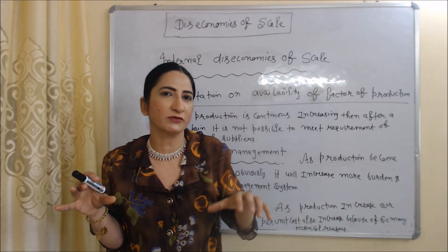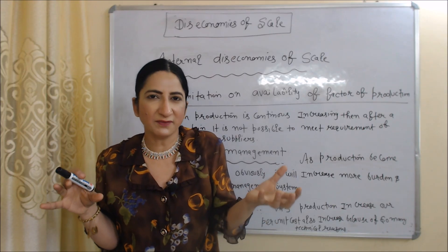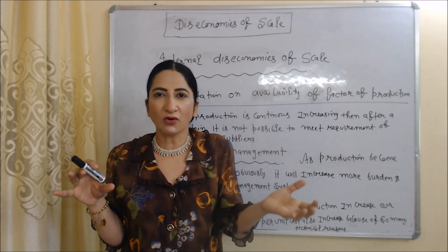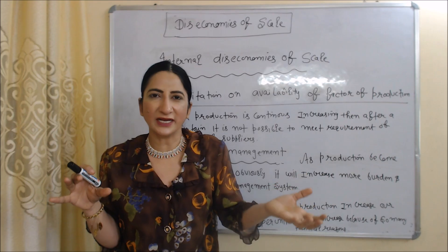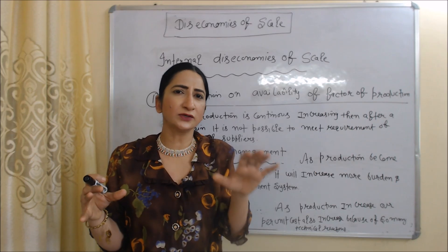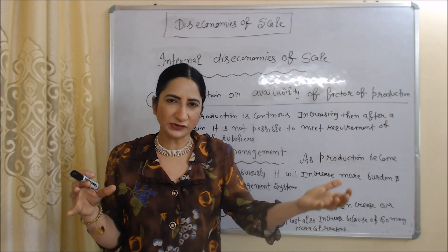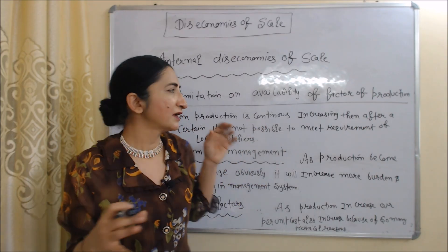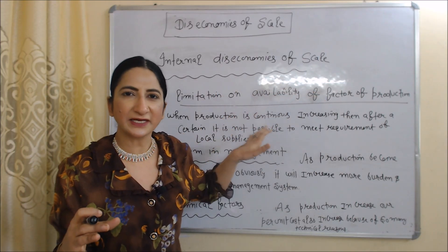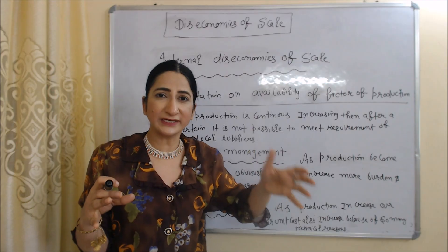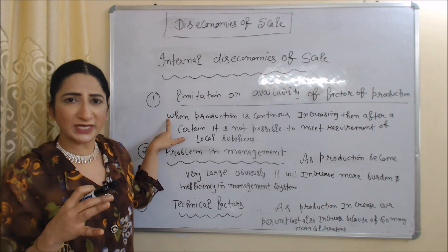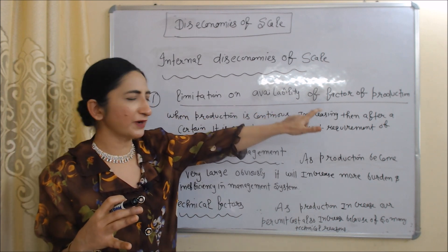Now we are going to talk about diseconomies of scale. Diseconomies of scale means a large organization is producing at a higher cost. Diseconomies of scale are also divided into two parts: internal diseconomies of scale and external diseconomies of scale. Internal diseconomies of scale means cost-increasing factors are found inside your company. The first internal diseconomy of scale is limitation on the availability of factors of production.